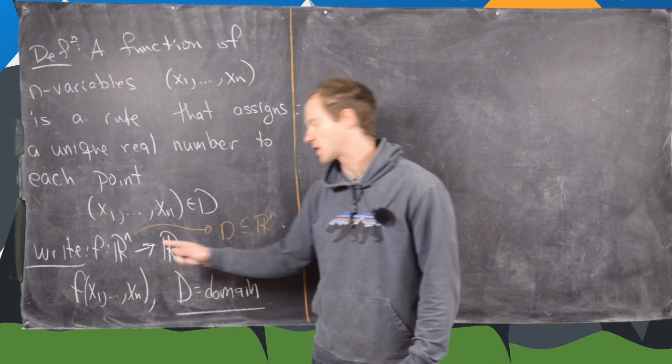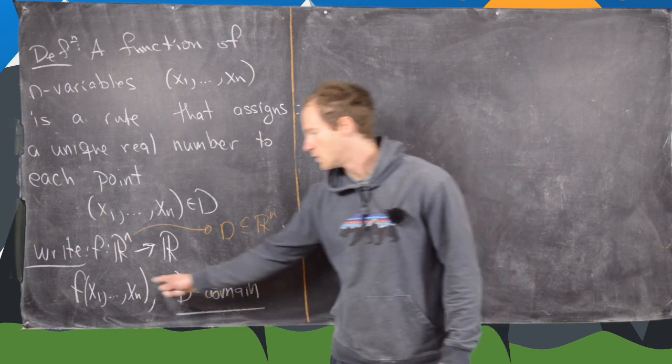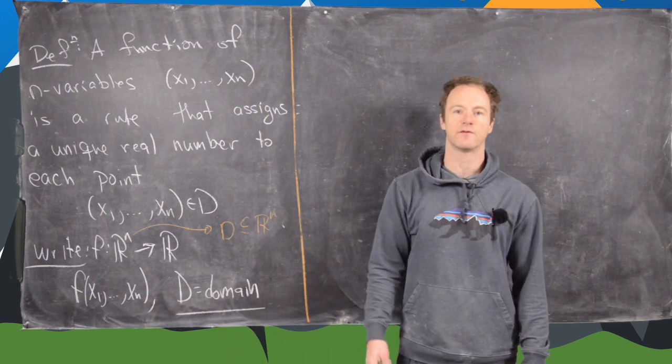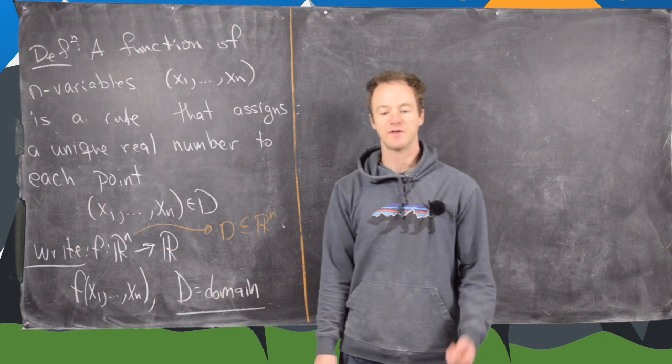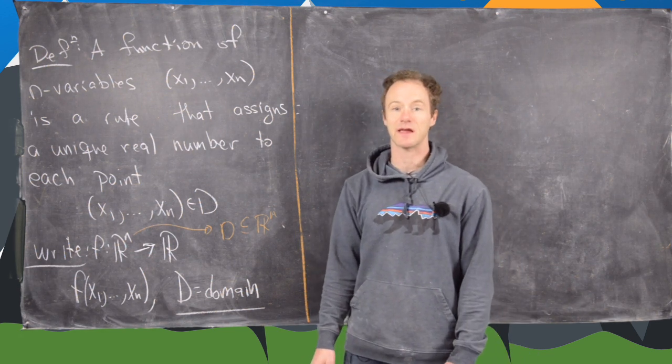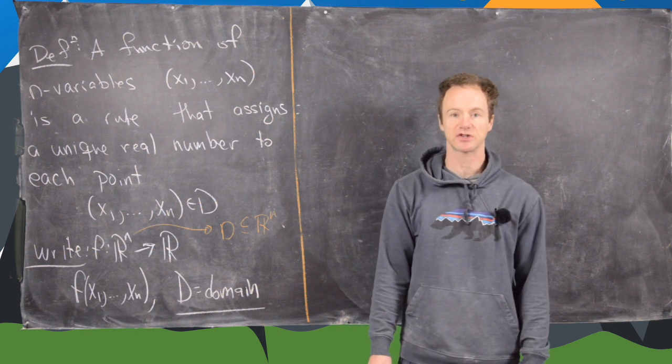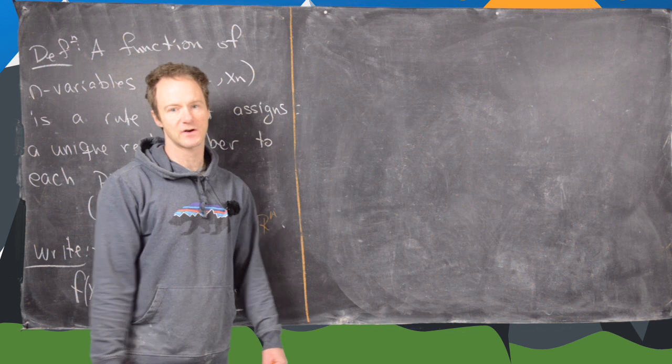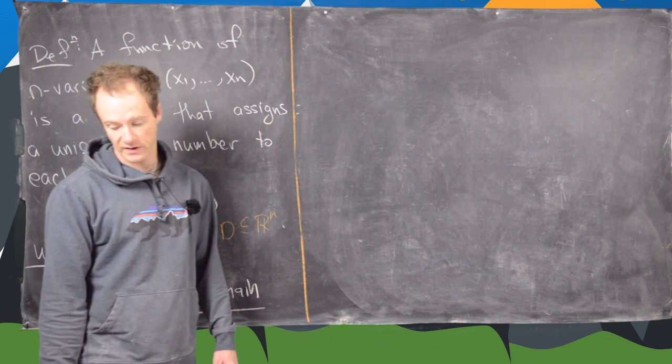This is like the domain and the co-domain. We'll write f of x1 to xn, and here d is the domain. In this video what I really want to do is look at a couple of examples of finding the domain of such functions and sketching the domain. We'll mostly look at two variable functions and maybe one three variable function.